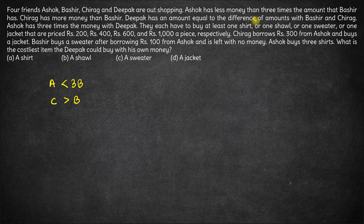Deepak has an amount equal to the difference of amounts with Bashir and Chirag. So the amount with Deepak is the difference of Chirag and Bashir. Since C is greater than B, D is equal to C minus B.